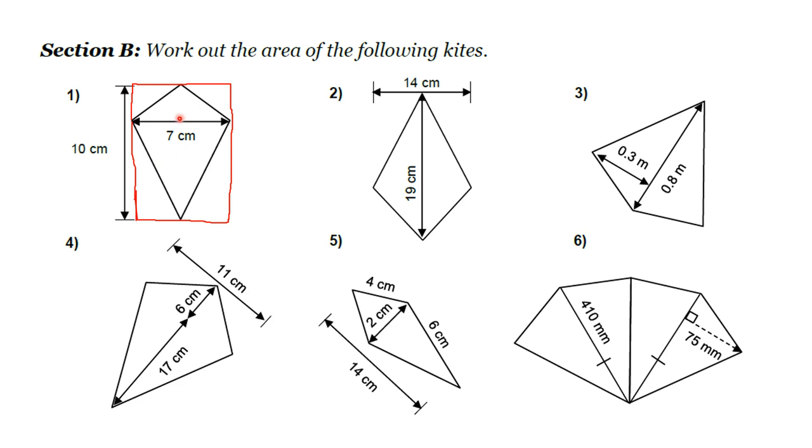So to work out a kite, all you need to do is your kind of base times height or your length times width and half it. So in this case, 10 times 7 halved.